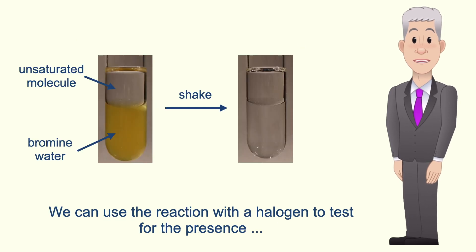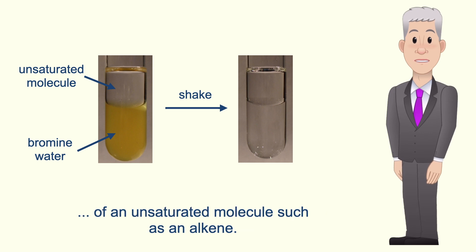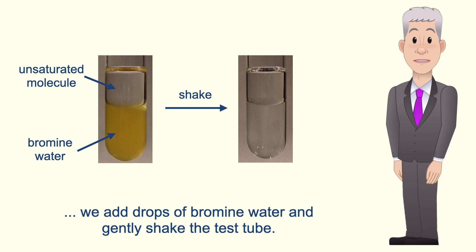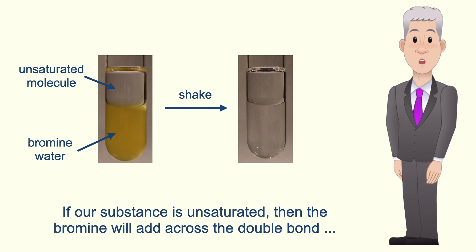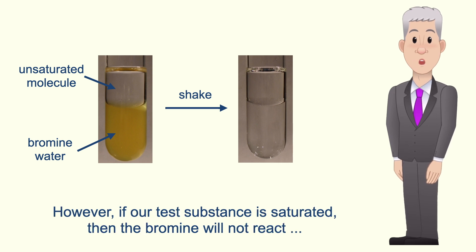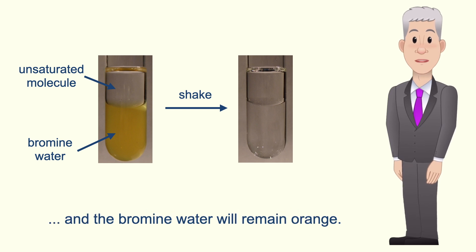We can use the reaction with a halogen to test for the presence of an unsaturated molecule such as an alkene. To do this we use bromine water, which has an orange-brown colour. To test if a substance is unsaturated, we add drops of bromine water and gently shake the test tube. If our substance is unsaturated, the bromine will add across the double bond and the product will be colourless, so we'll see the orange bromine water decolourise. However, if our test substance is saturated, the bromine will not react and the bromine water will remain orange.